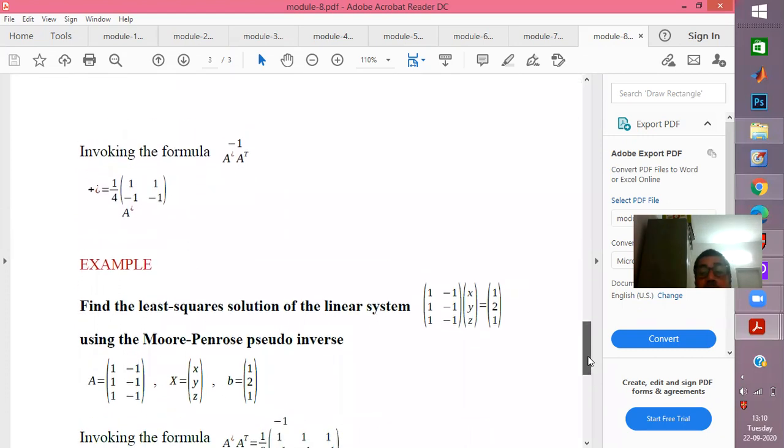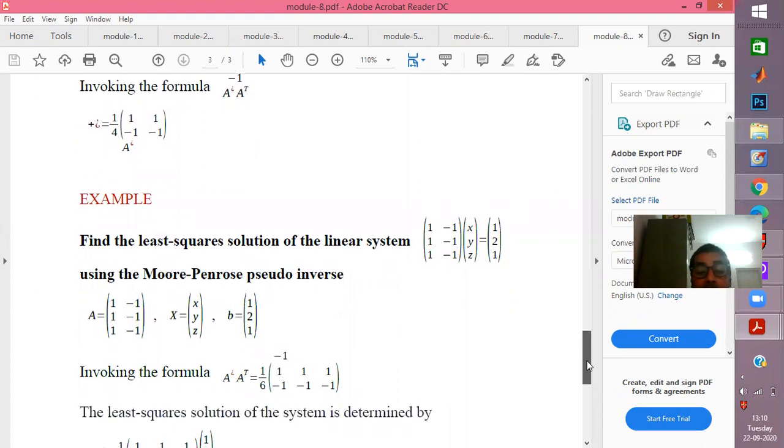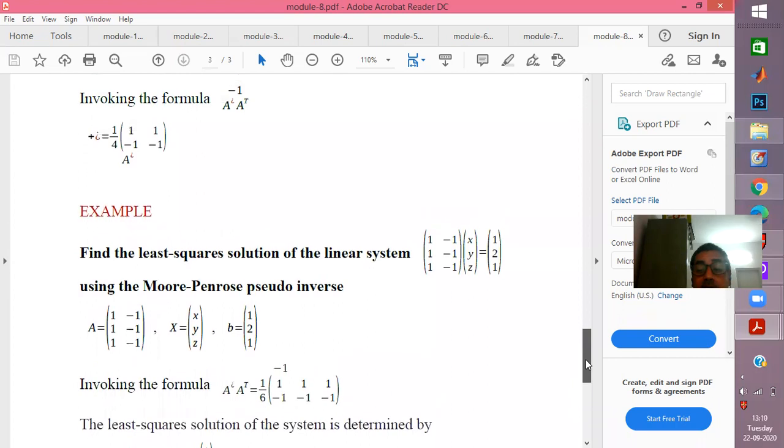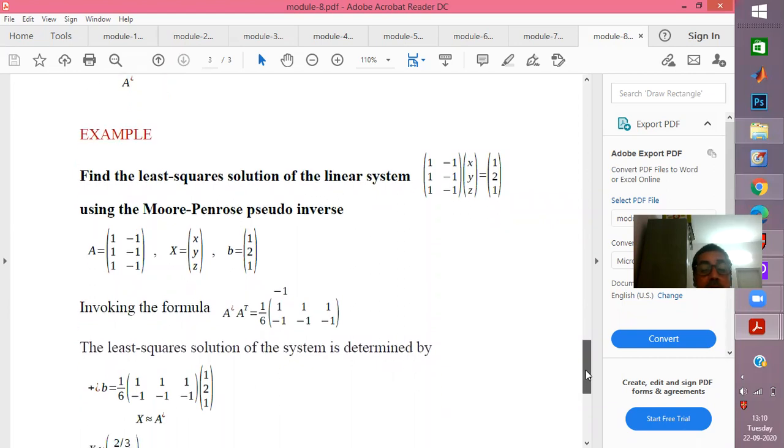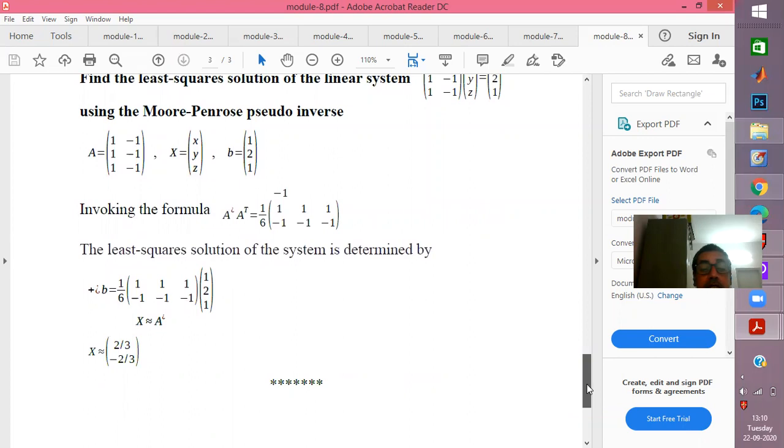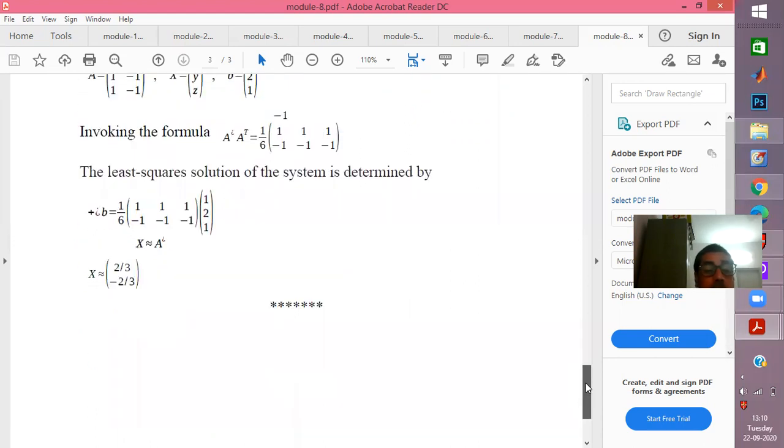Here is an example where we take a system of linear equations. You can see that there are three equations and actually only two variables, x and y, so that makes it overdetermined. Then we try to find the approximate solution of this particular system. First we calculate the matrix A transpose A, and then we find out the generalized inverse, that is A plus, as A transpose A whole inverse into A transpose. Then we find out the approximate solution vector as x equals A plus into b, that is pseudo inverse into b, and we get two by three comma minus two by three as a solution vector.